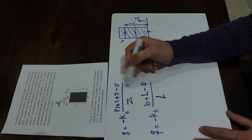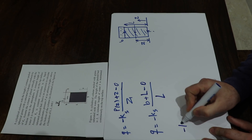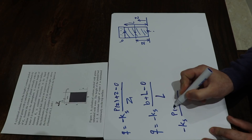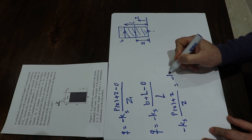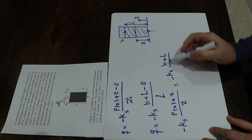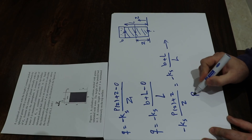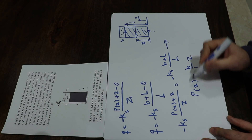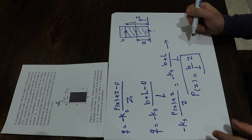You can equate these two expressions. Therefore, minus Ks times (Pz plus Z) divided by Z equals minus Ks times (B plus L) divided by L. Rearranging this equation, you obtain Pz equals (B divided by L) times Z. And that's the solution to this question.